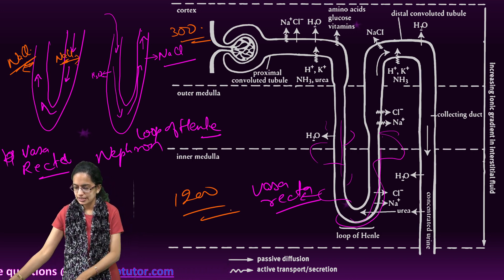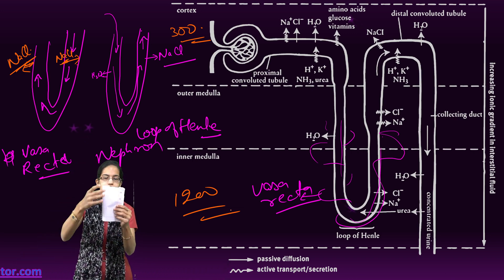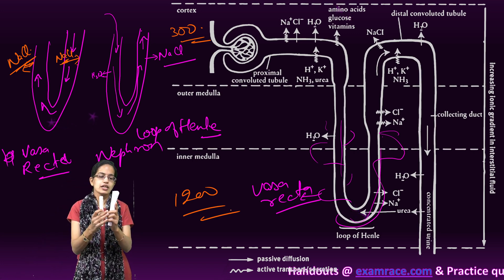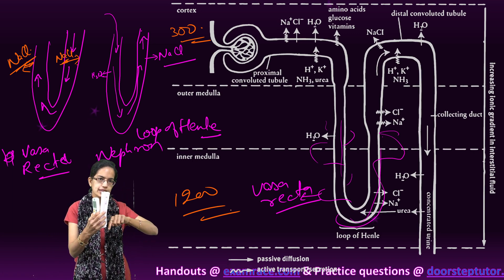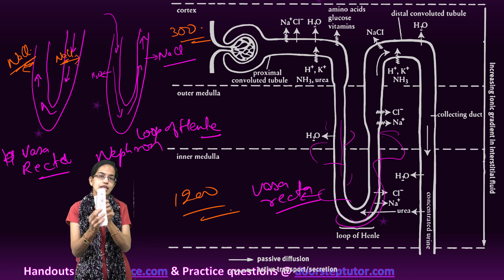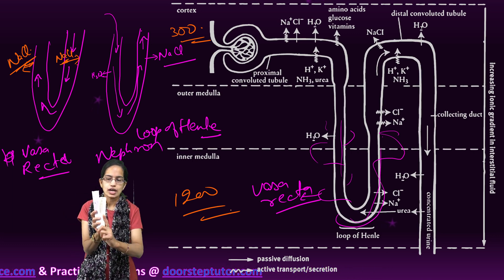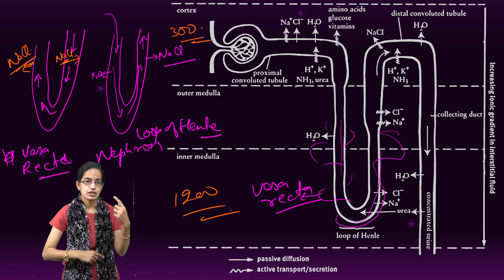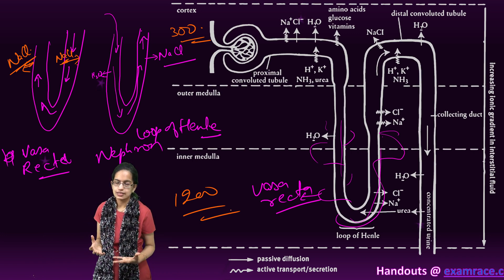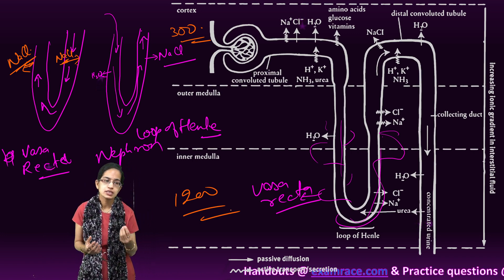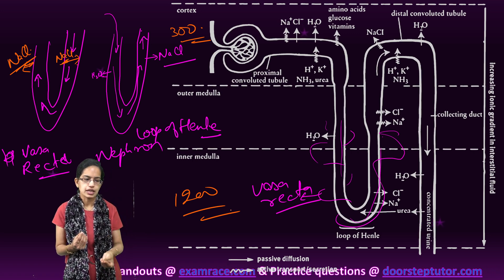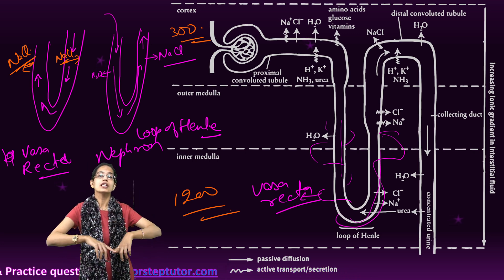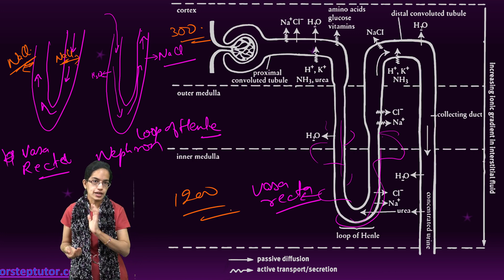To summarize: the loop of Henle is on the inside and the vasa recta surrounds it on the outside. Flow within the loop of Henle goes in one direction, and within the vasa recta it flows in the opposite direction, creating a counter-current mechanism. This maintains the concentration gradient of the interstitial medulla and helps concentrate urine to nearly four times the initial filtrate produced by the glomerulus.